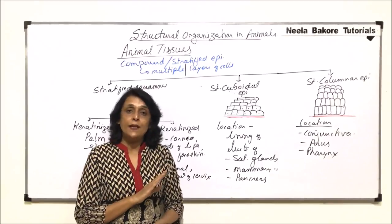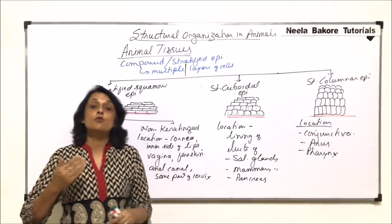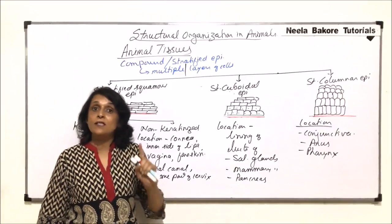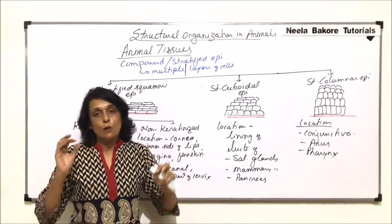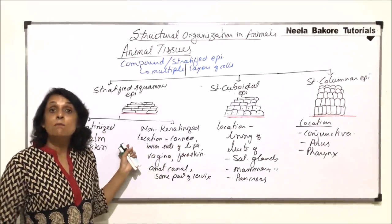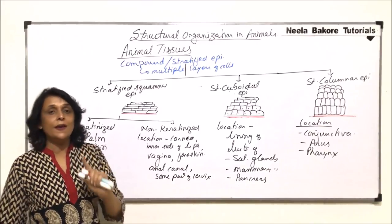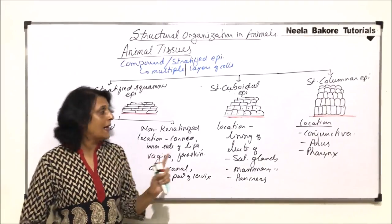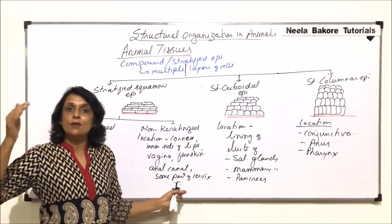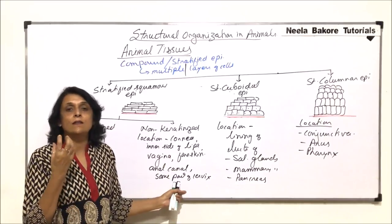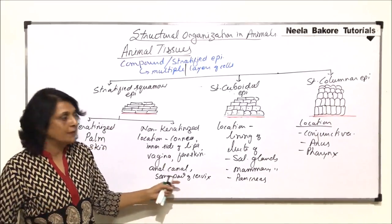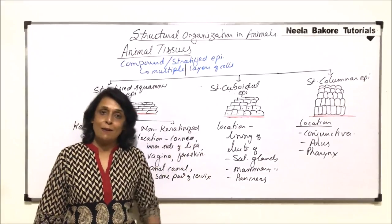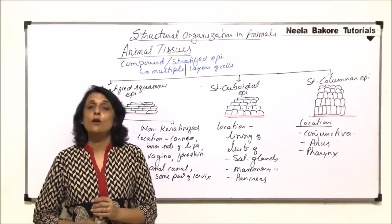Simple epithelium, that means single layer, is normally found where something is to be exchanged. Stratified or compound epithelium is found wherever we need some kind of protection. A single layer helps in exchange of substances and multiple layers provide protection. So epithelium tissue does two functions: it helps in absorption or transport of substances across it, as well as protection. The layer on the outer surface provides protection, while the layer on the inner side, like in alveoli or capillaries, helps in transport or exchange of substances. In the next part, we will be talking about glands.